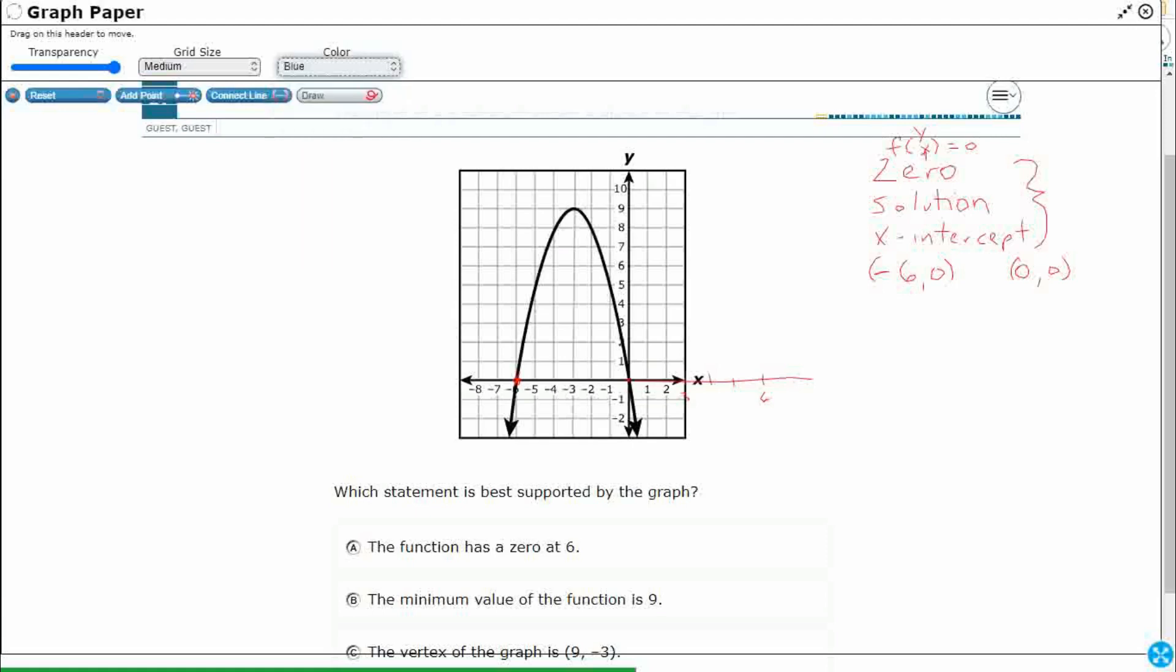The minimum value of the function is 9. Okay, so when we get minimum or maximum values, those are both talking about, you need to look at the y value of the vertex. So where is our vertex? Okay, our vertex is right there. And what is the coordinate pair there? Well, it looks like it's negative 3, 9. Okay, so we're looking at the y value of our vertex. And yeah, it looks like it's a 9.